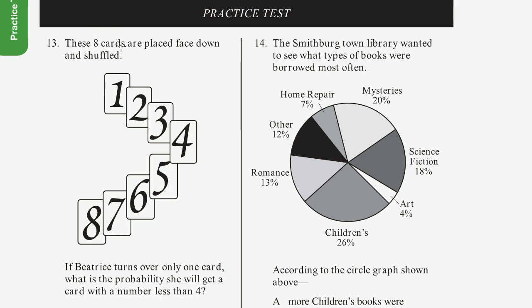Problem 13. These eight cards are placed face down and shuffled. So these are the eight cards. If Beatrice turns over only one card, what is the probability that she will get a card with a number less than 4?